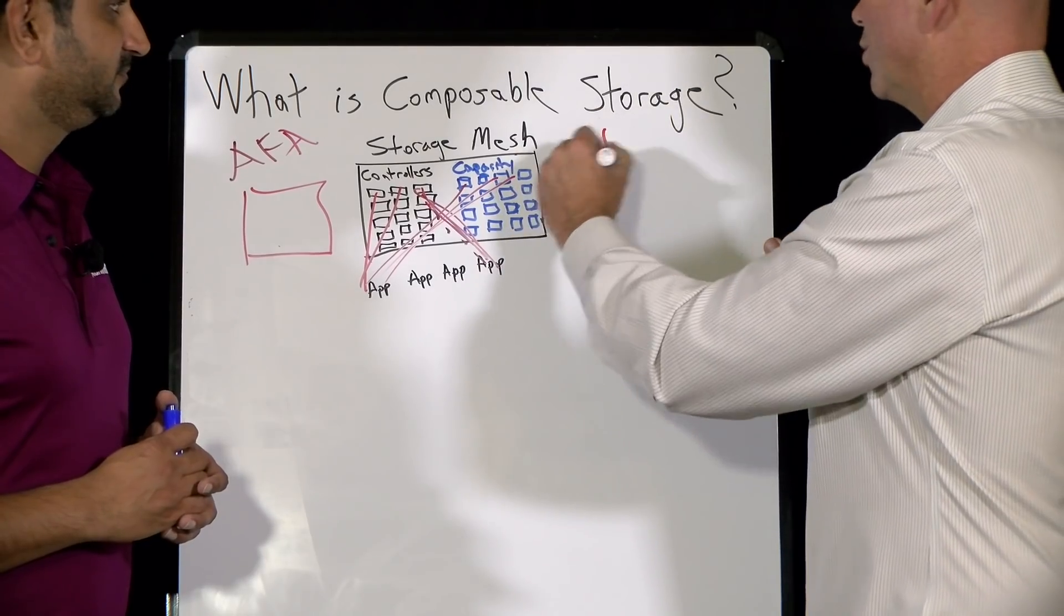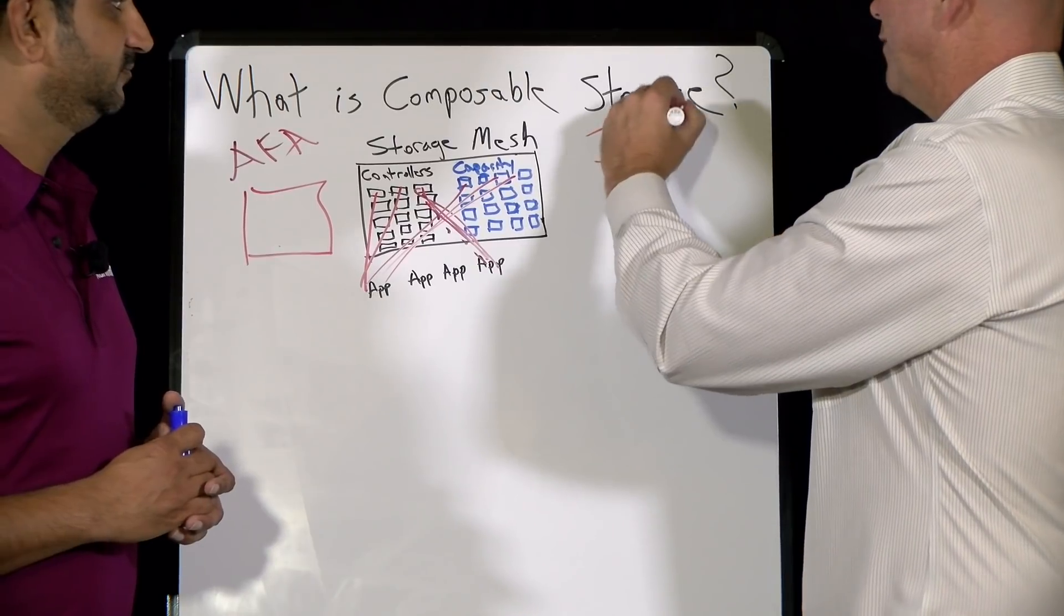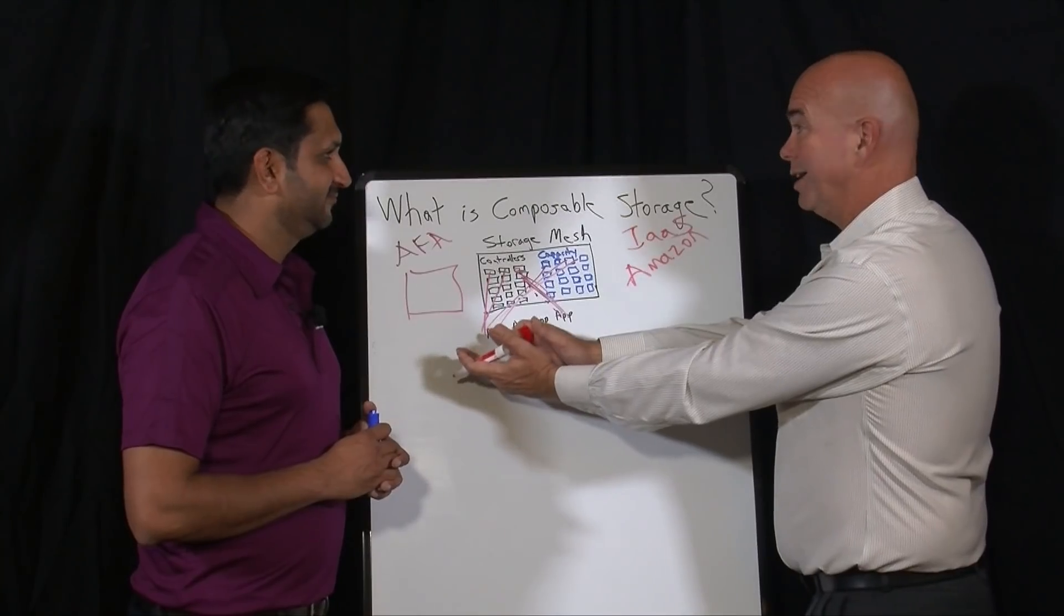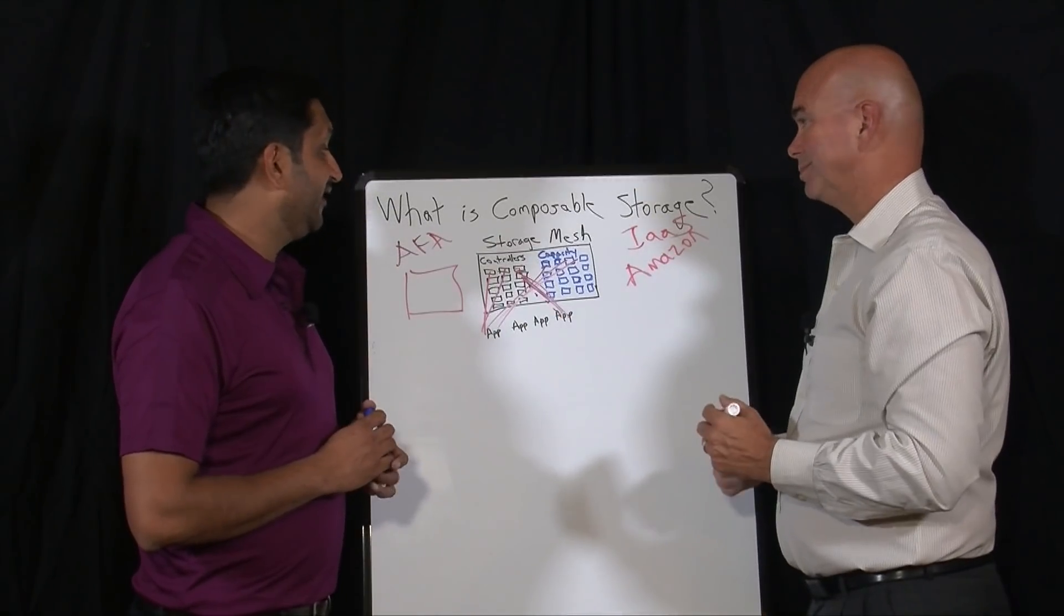Then on the other side, we've got the opposite problem. We've got infrastructure as a service, probably best represented by Amazon and Google. We can divide up like crazy, but then I can't get the performance that I need, right? Exactly, performance and efficiency at scale. Now you guys are working on something called composable storage that really attempts to solve this. Why don't you walk us through that?